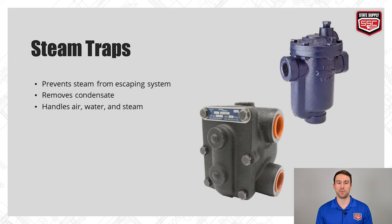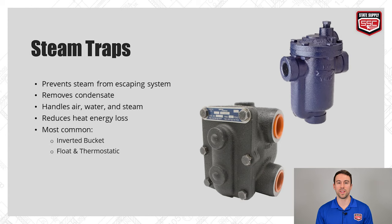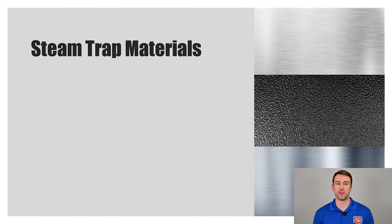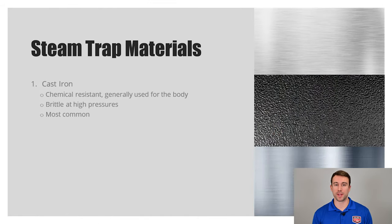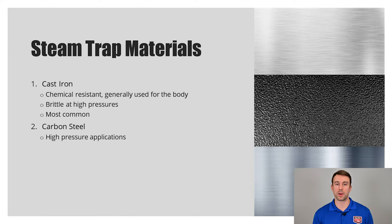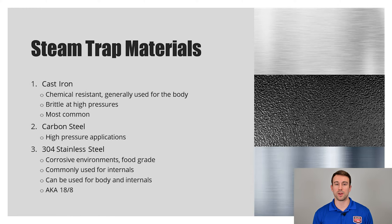A good steam trap that's operating properly will reduce heat energy loss. The main two types of traps are the inverted bucket and the float thermostatic. Steam traps are composed of several materials. Cast iron is chemically resistant, used mostly for the body, and is brittle at high pressures but by far the most common. Carbon steel is used in high pressure applications, generally 250 psi or above. Stainless steel is used in highly corrosive environments and where food is processed, commonly used for the internals, and is by far the most expensive.